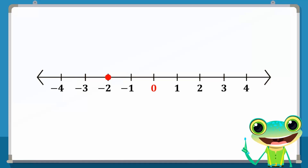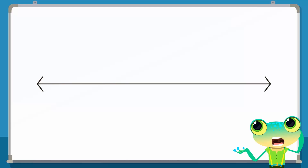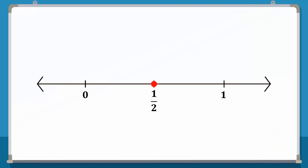But what about rational numbers? Suppose Octo now asks Ting to come outside room 1 over 2. However, Ting has no idea where he can find such a strangely numbered room. Since 1 over 2 is positive and is less than 1, we can conclude that this number lies between the consecutive integers 0 and 1. We divide the line segment between 0 and 1 into two equal parts and represent 1 over 2 like this. Now, Ting can finally meet Octo outside room 1 over 2.